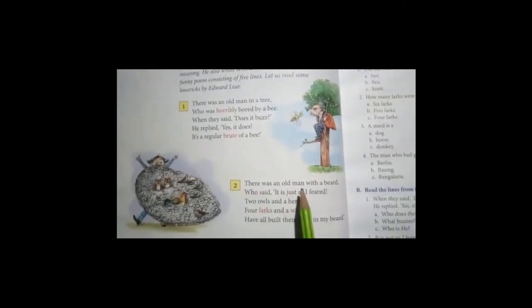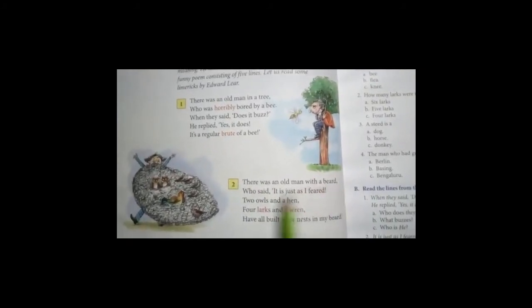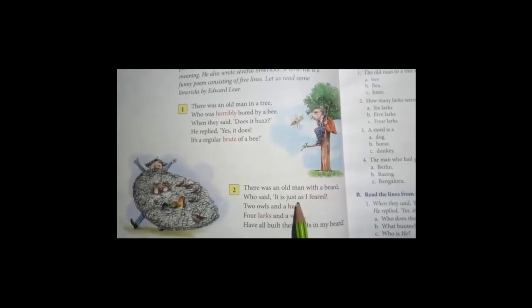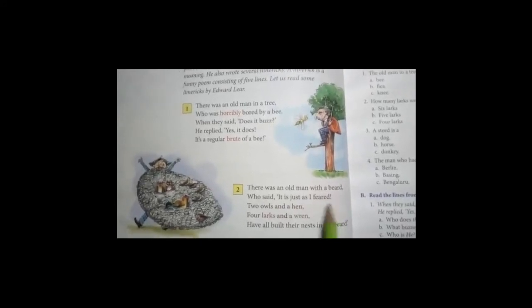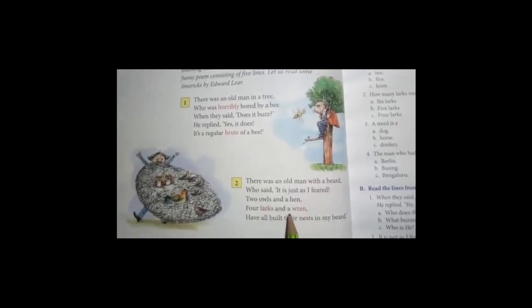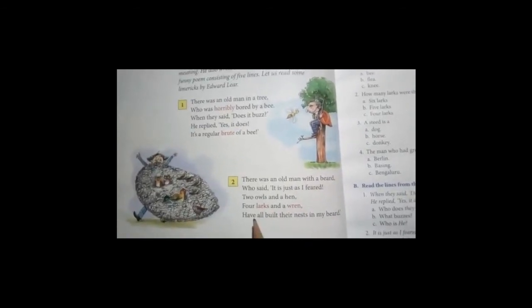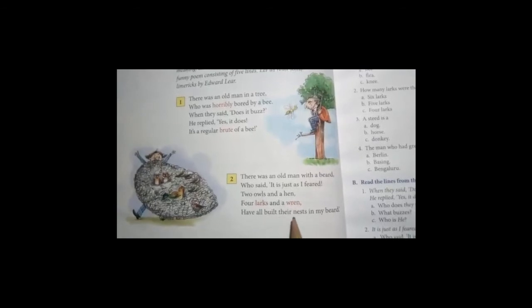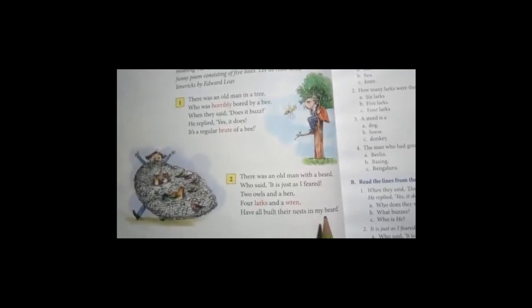There was an old man with a beard who said, it is just as I feared. Two owls and a hen, four lark and a wren have all built their nests in my beard.